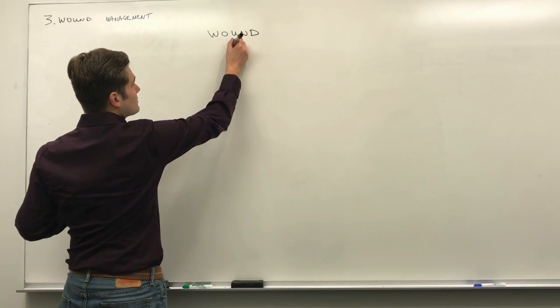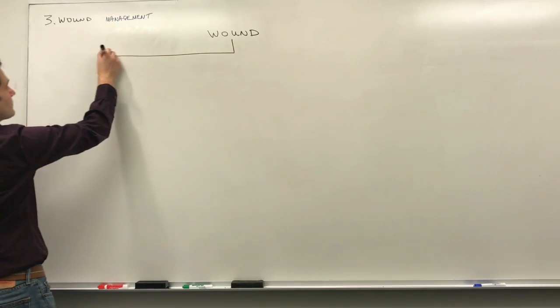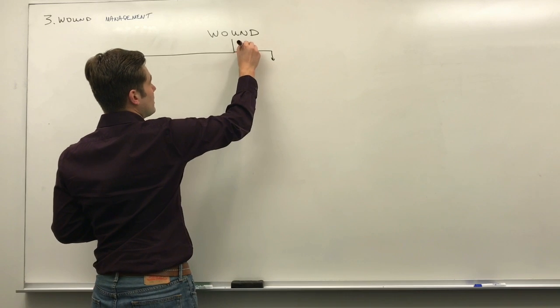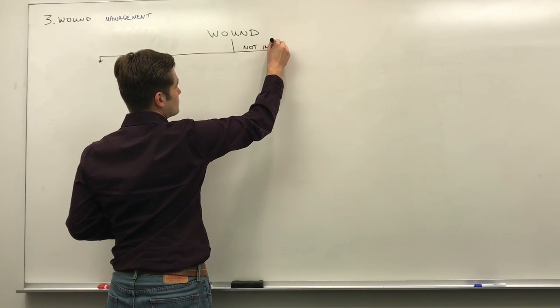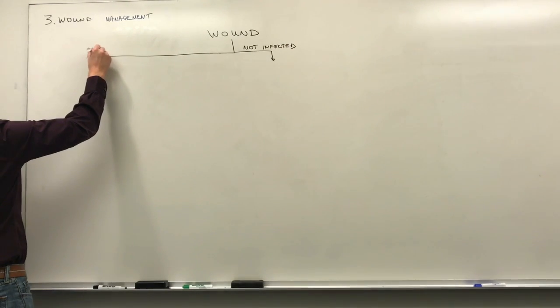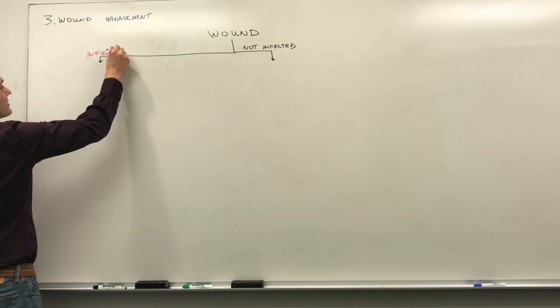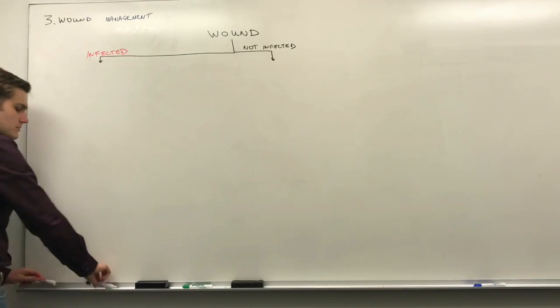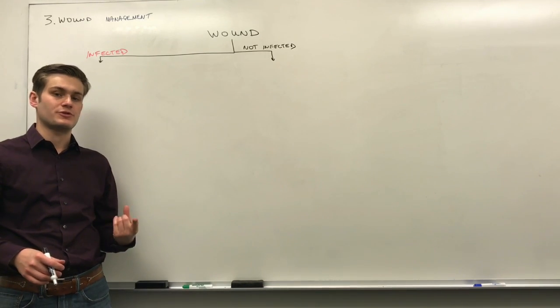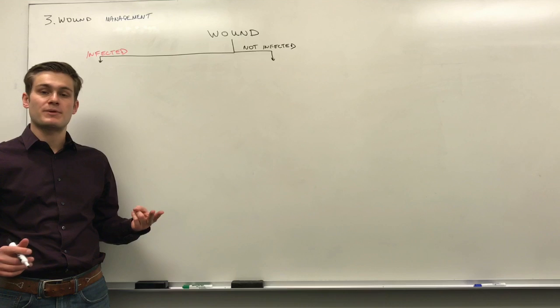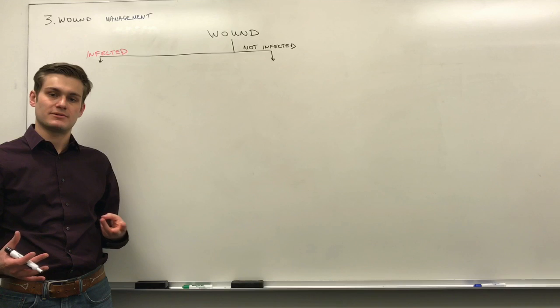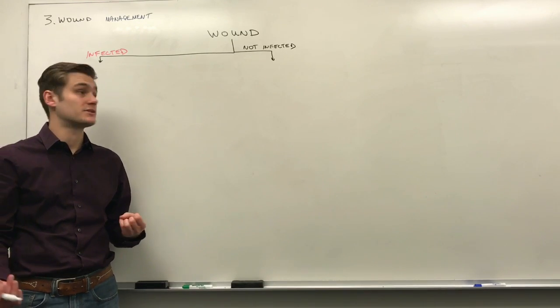Let's first look at whether it's infected or not. Here would be not infected, and here would be infected. Now, for every type of wound, we want to think about three things. We want to think about what's the goal of our treatment. The second is how are we going to prepare the wound bed to execute our treatment. And third is, practically, what kind of dressing do we want to apply.